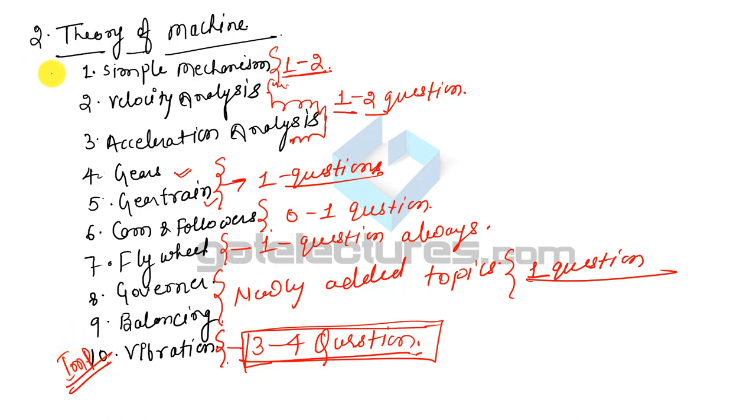To summarize Theory of Machine: vibration is the most important topic, followed by simple mechanisms and velocity/acceleration analysis — these are the very important topics. Next, we will move to the analysis of Strength of Material.